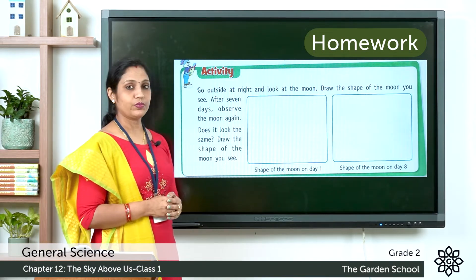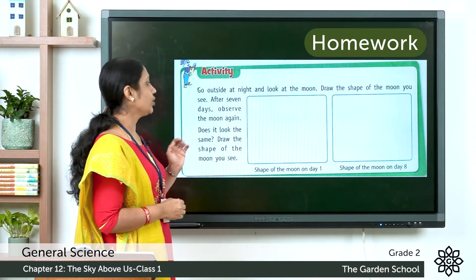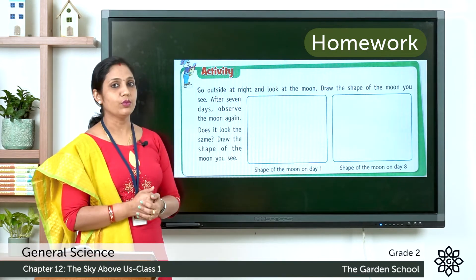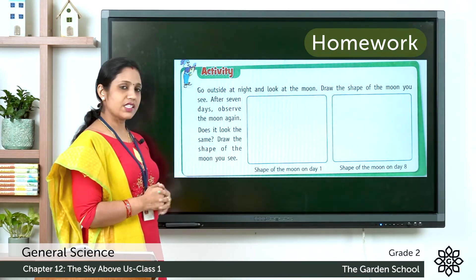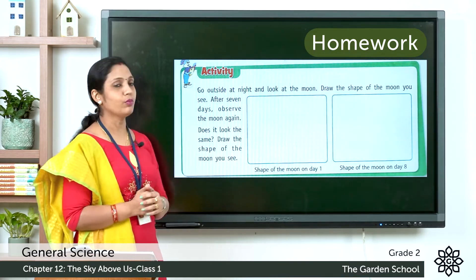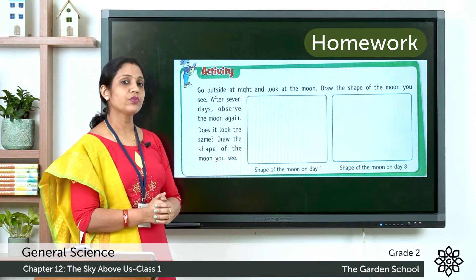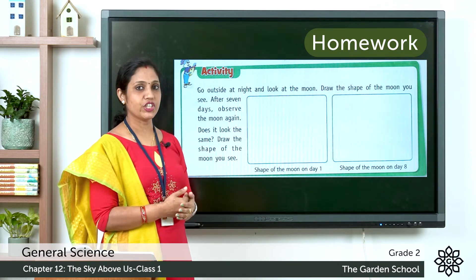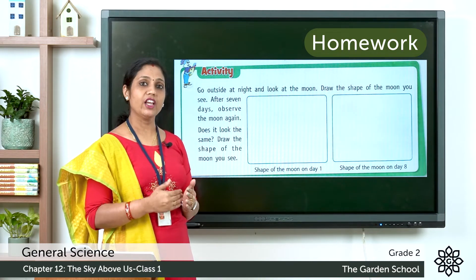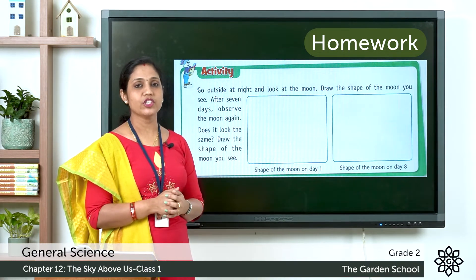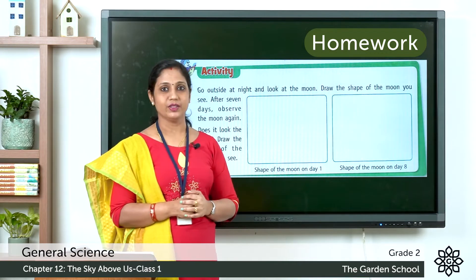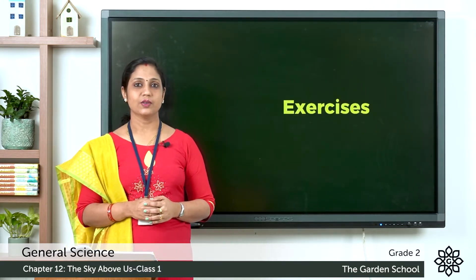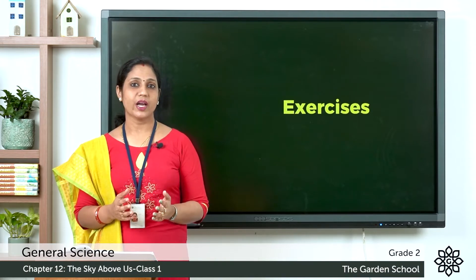The next activity is on page 97. Go outside at night and look at the moon — draw the shape of the moon you see. After seven days, observe the moon again. Does it look the same? Draw the shape of the moon you see. Observe the shape and draw it. After finishing these activities, read the chapter two times and then let's move on to the exercises.